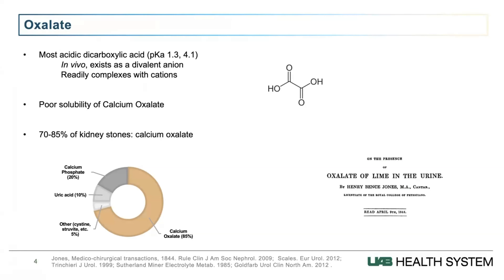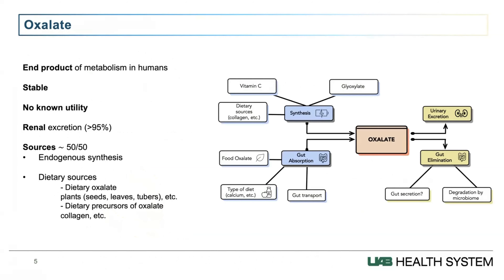First of all, I need to introduce oxalate, which is a small dicarboxylic acid that in vivo forms complexes with calcium. The problem present in human disease is that calcium oxalate is very poorly soluble, it crystallizes, and in the urine it can form kidney stones. The majority of kidney stones are composed of calcium oxalate, about 70 to 80 percent, and that has been recognized since the 19th century.